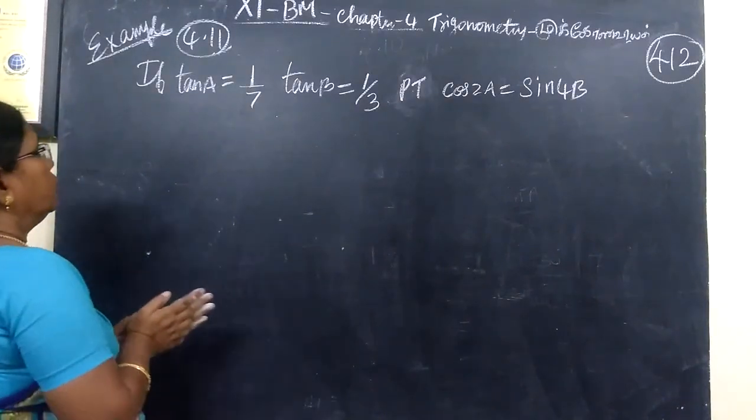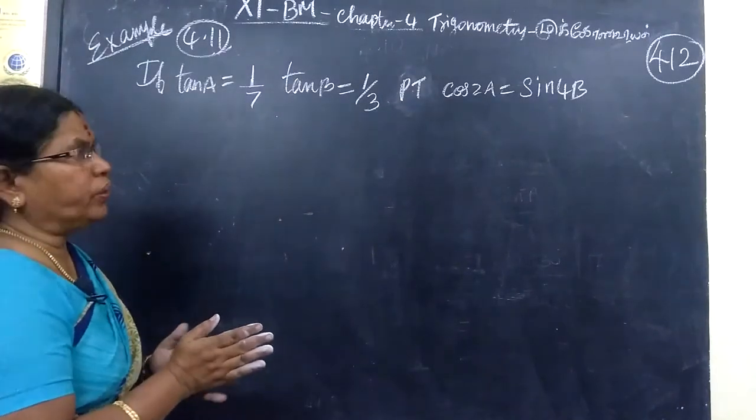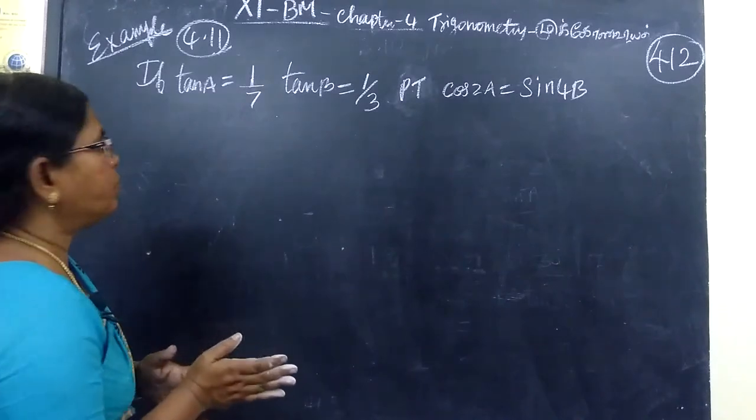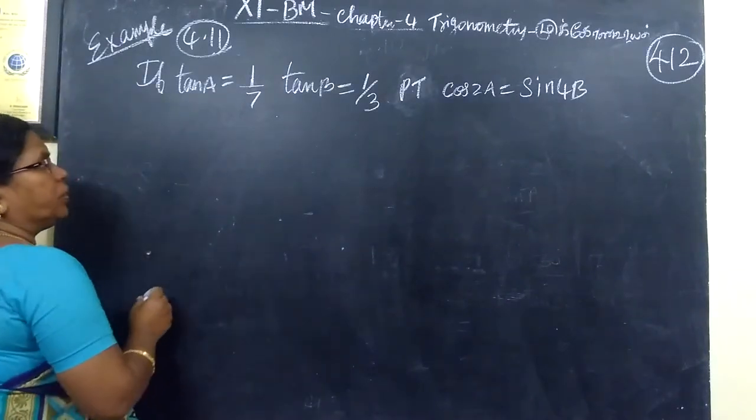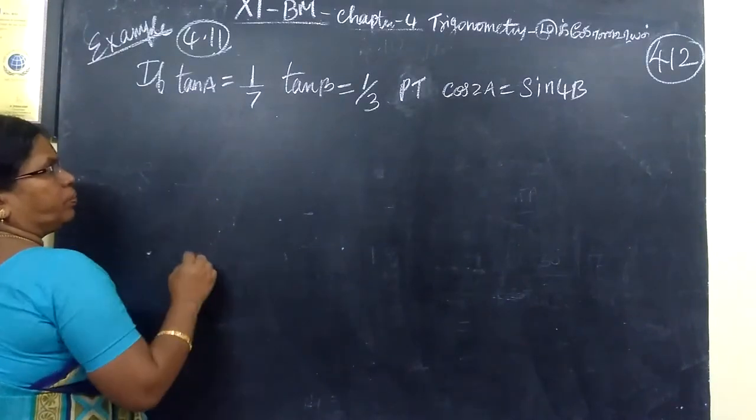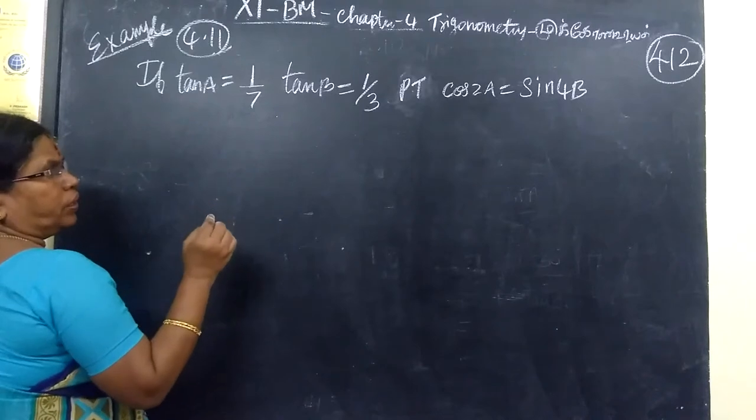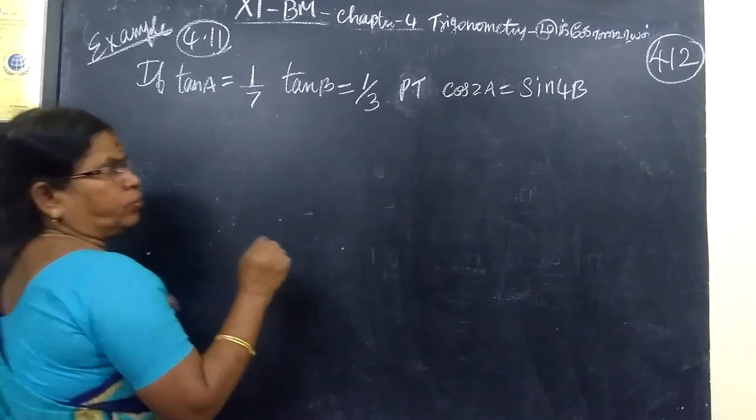So, coming to the next question. Example 4.11, 11th business math. If tan a equal to 1 by 7, tan b equal to 1 by 3, prove that cos 2a equal to sin 4b.